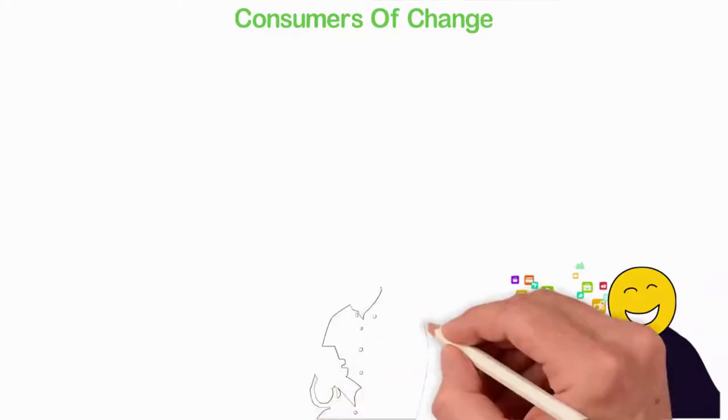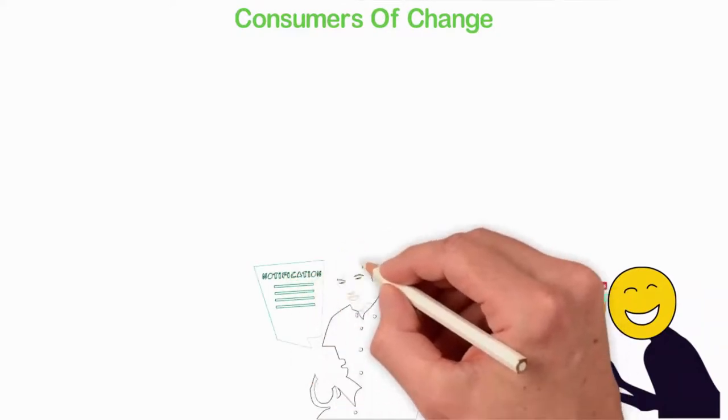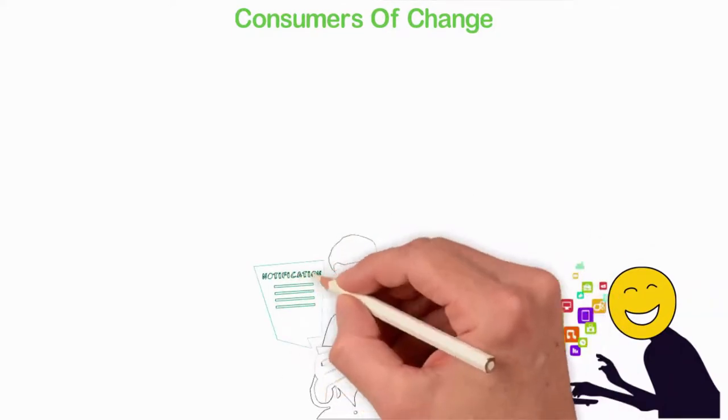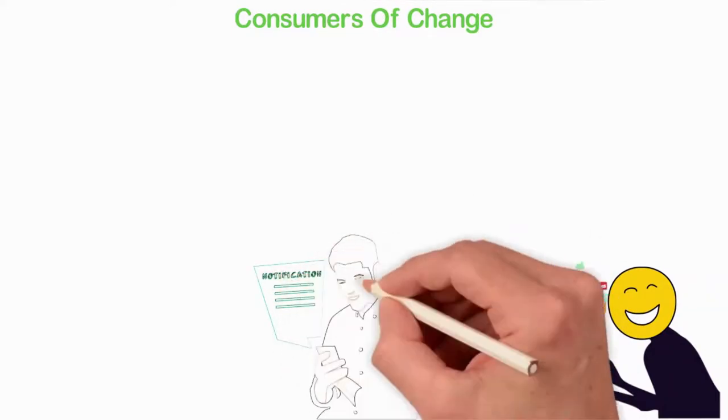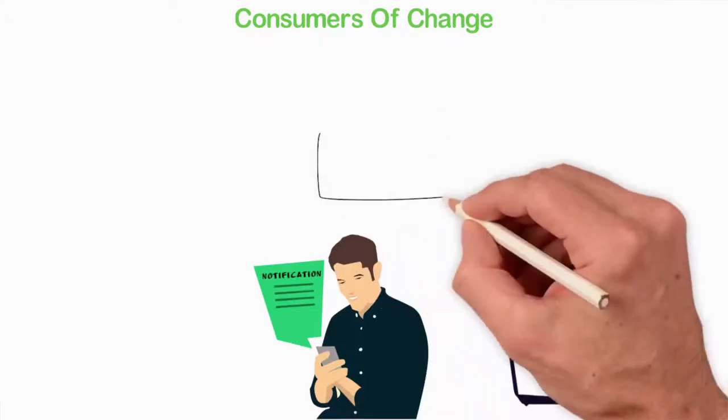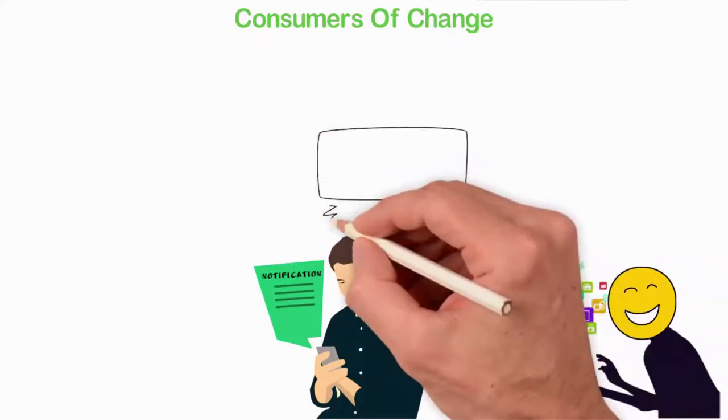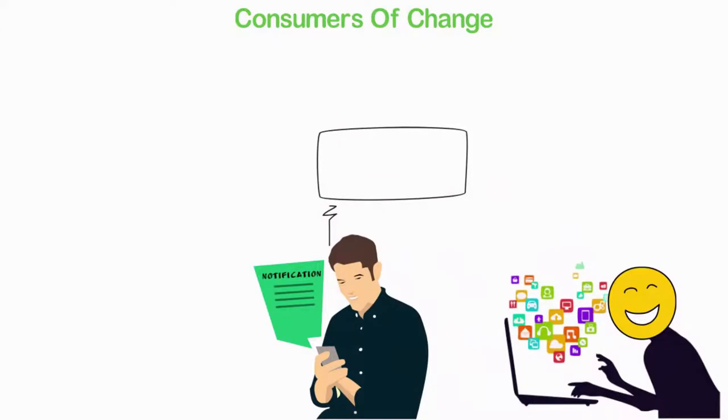You see, most people would have been super rich if they are not mere consumers. Please don't get me wrong, everyone has to consume to live. We all have to eat, use phones, clothes, cars, the internet and others.